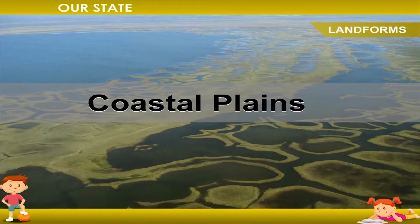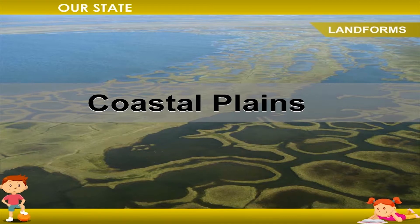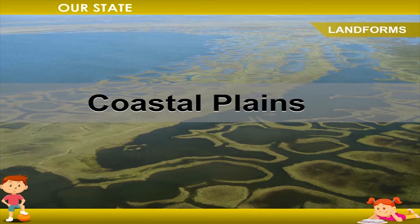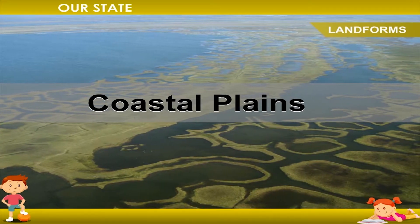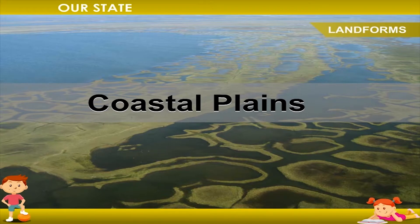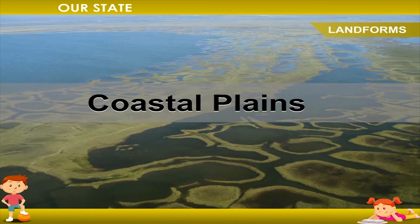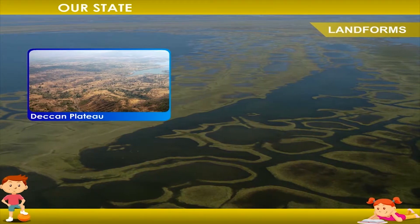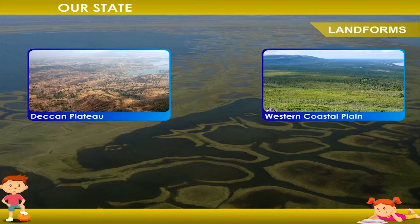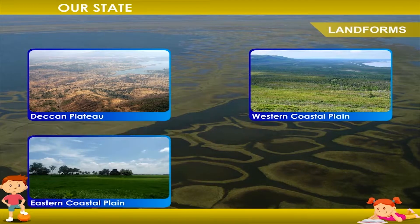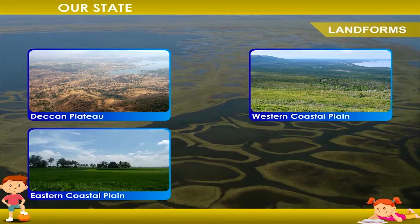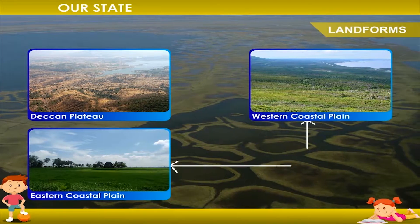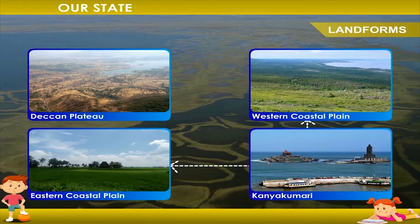The Coastal Plains: Our country has a long coastline. The Deccan Plateau separates the western coastal plain from the eastern coastal plain, and both these meet at Kanyakumari.